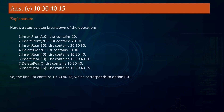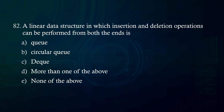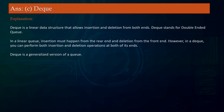A linear data structure in which insertion and deletion operations can be performed from both ends is: A. Queue B. Circular queue C. Dequeue D. More than one of the above E. None of the above. Answer: Dequeue. Explanation: Dequeue is a linear data structure that allows insertion and deletion from both ends. Dequeue stands for double-ended queue. In a linear queue, insertion must happen from the rear end and deletion from the front end. However, in a dequeue, you can perform both insertion and deletion operations at both ends. Dequeue is a generalized version of a queue.